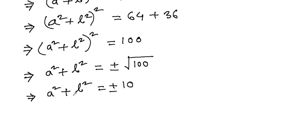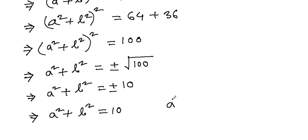Now, the square of a real number cannot be negative, so a² + b² = 10. The case a² + b² = -10 is rejected.